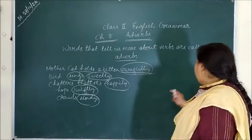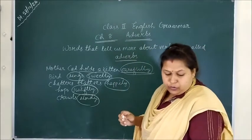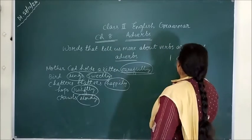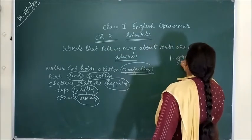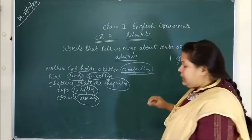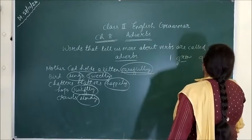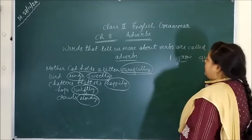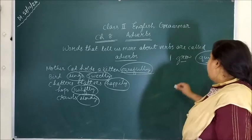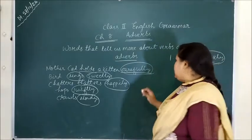Question number 1: grow quickly. 'Grow' is your verb, and 'quickly' is your adverb. You need to underline the adverb and underline 'grow' below it.